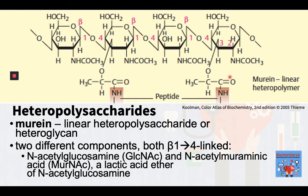In contrast, the linear heteroglycan murein, shown here, is a structural polysaccharide that stabilizes the cell walls of bacteria. It has a more complex structure; only a short segment of this thread-like molecule is illustrated here. In murein, two different components, both beta-1,4-linked, alternate with each other. These two components are N-acetylglucosamine and N-acetylmuraminic acid, a lactic acid ether of N-acetylglucosamine.